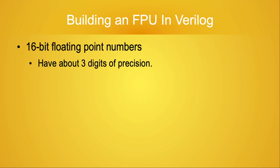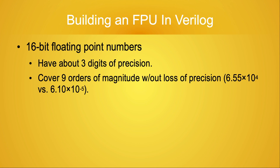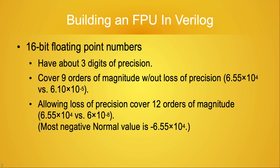By treating those same 16 bits as a floating-point number, at best we have only 3 digits of precision. But look at what happens to the range of magnitudes. The largest number we can represent is about 65,500, or 6.55 times 10 to the 4th power. Without losing precision, the smallest non-zero number we can represent is about 6.10 times 10 to the minus 5th power. This is a span of about 9 orders of magnitude. If we're willing to give up more precision, we can span 12 orders of magnitude.